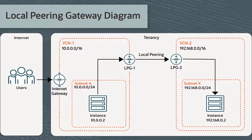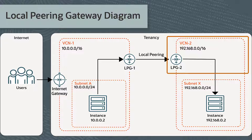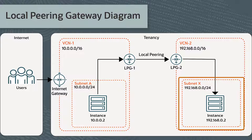In this diagram, we see two local peering gateways, LPG-1 and LPG-2. LPG-1 is on VCN-1, which has a CIDR block of 10.0.0.0/16. LPG-2 is on VCN-2, which has a CIDR block of 192.168.0.0/16. VCN-1 has one subnet called Subnet-A and one compute instance with a private IP address of 10.0.0.2. VCN-2 has one subnet called Subnet-X and one compute instance with a private IP address of 192.168.0.2.